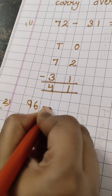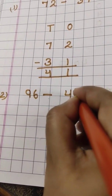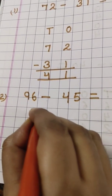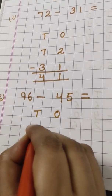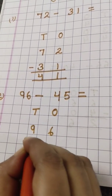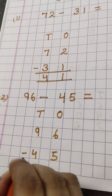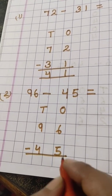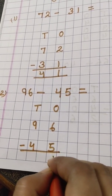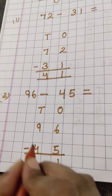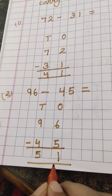One more practice: 96 minus 45. Again write T and O — write 96 here and 45 here, put the minus sign. 6 minus 5 gives 1, and 9 minus 4 gives 5. So the answer is 51.